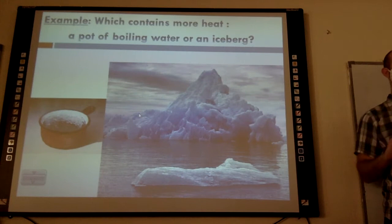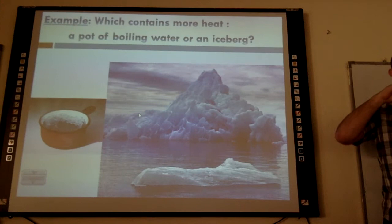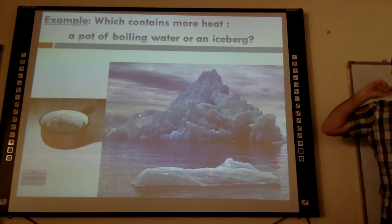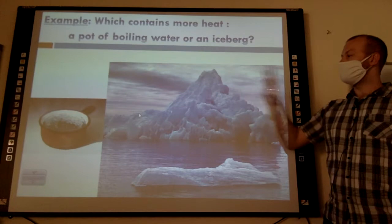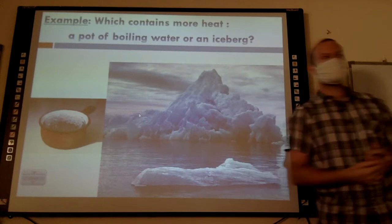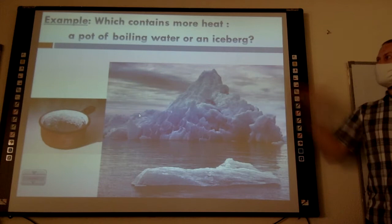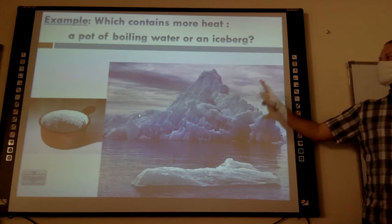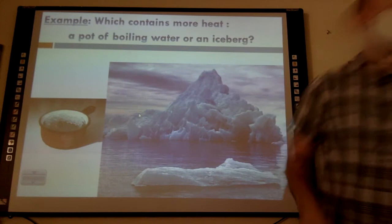In terms of heat, the iceberg has way more heat, just due to the fact that it has a lot more particles. If I were to talk about which of these two has the bigger temperature, it's the boiling water — water boils at 100 degrees. Temperature is the average amount of energy, but if I look at the total kinetic energy of all the particles, the iceberg wins — it's just due to the sheer volume.